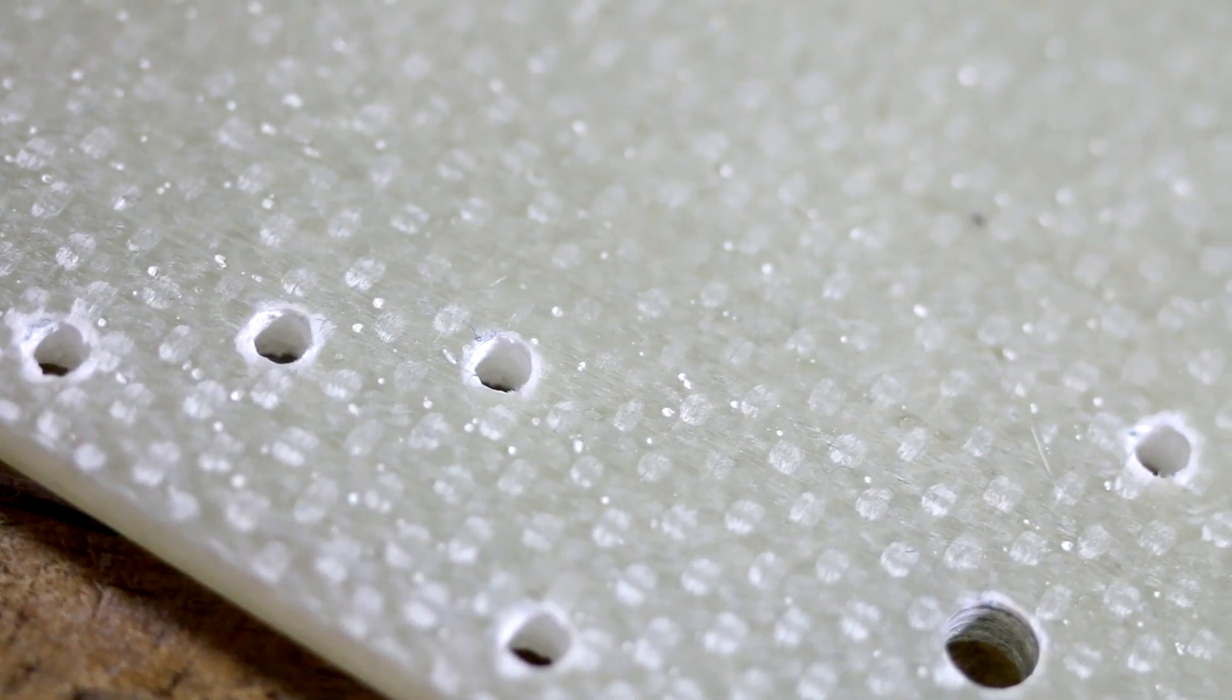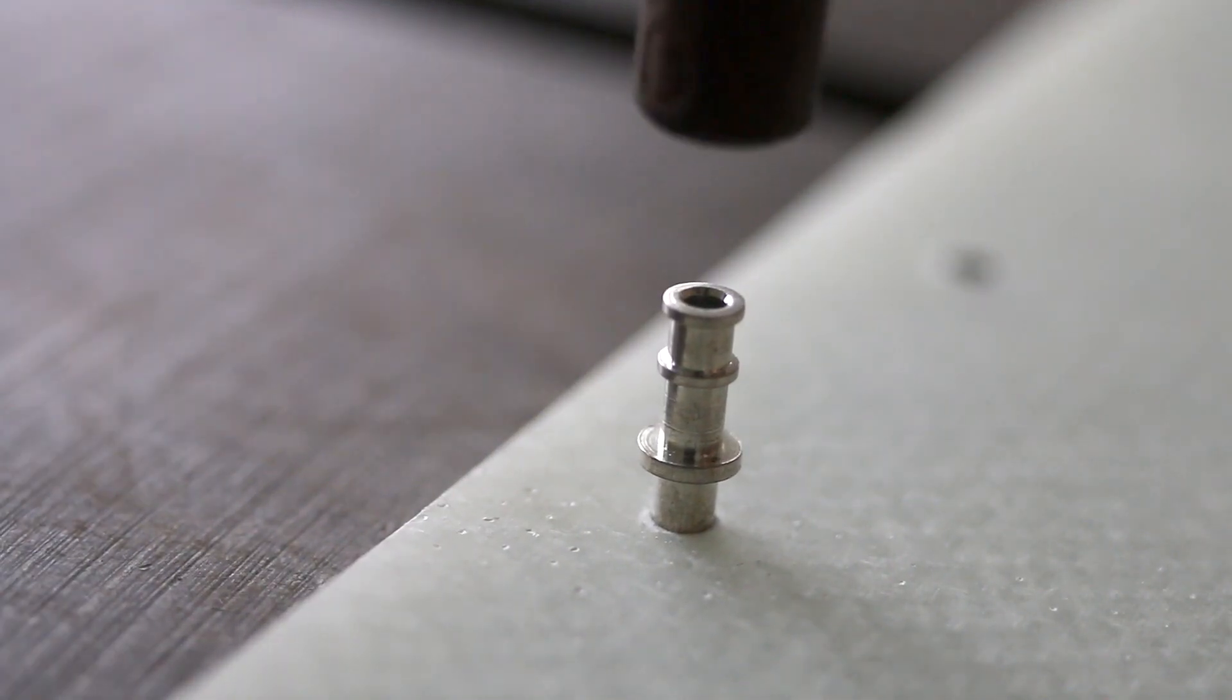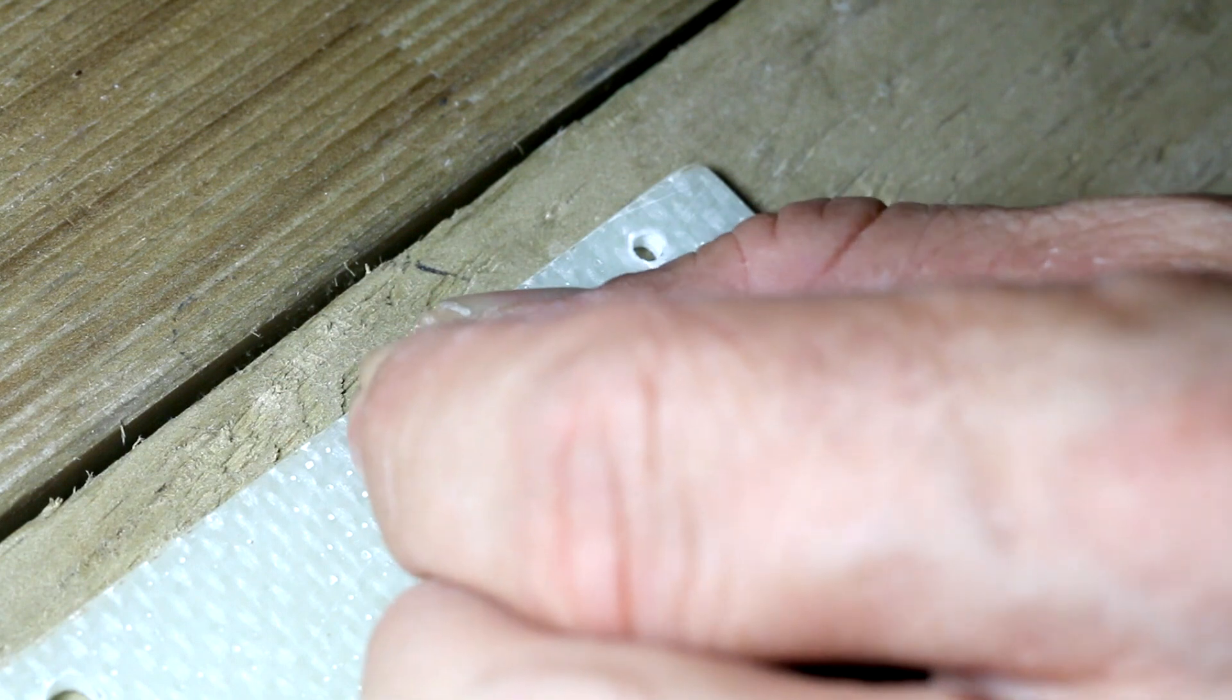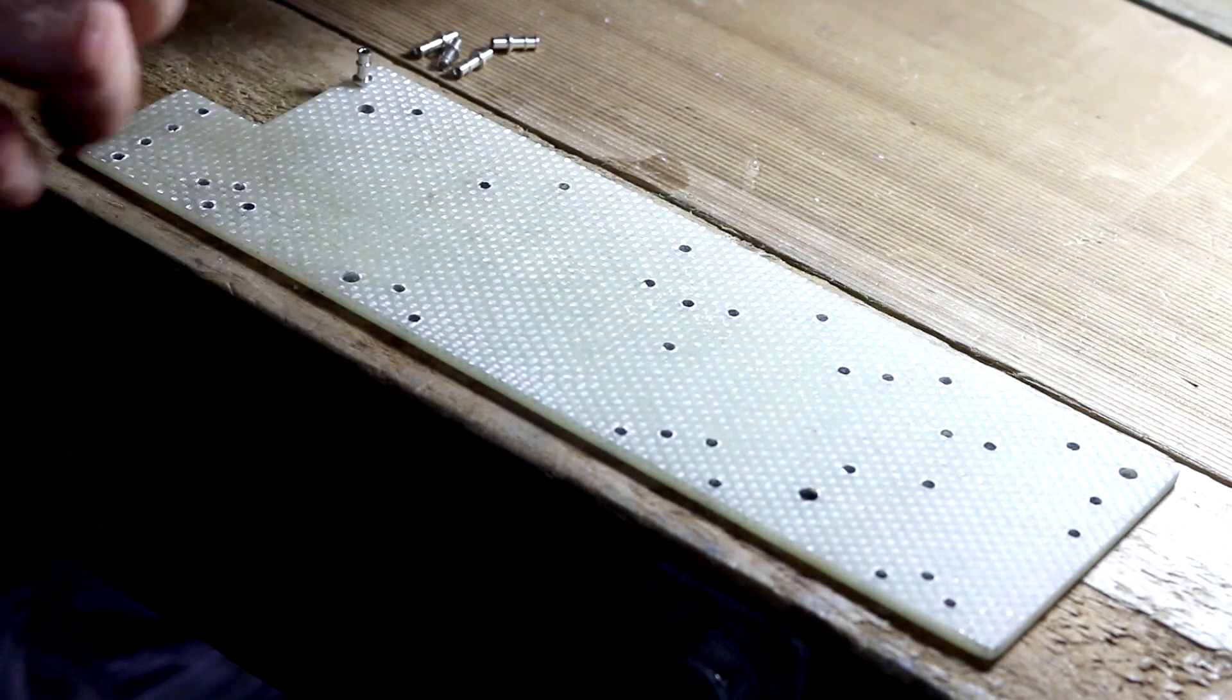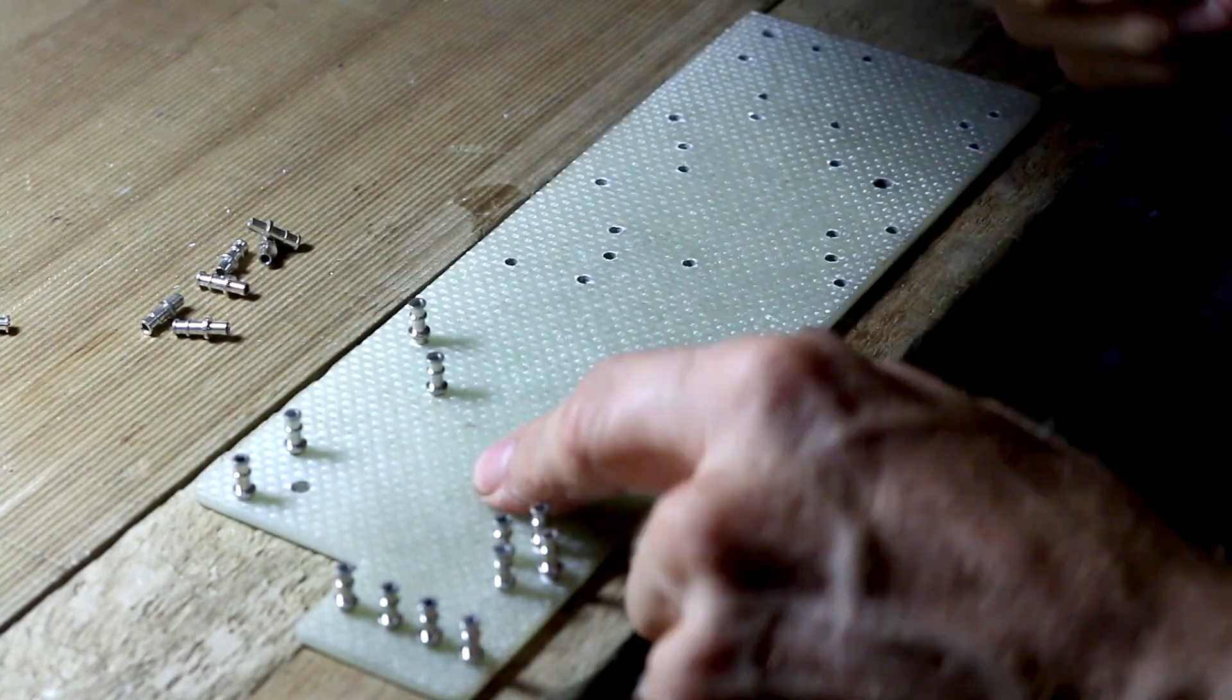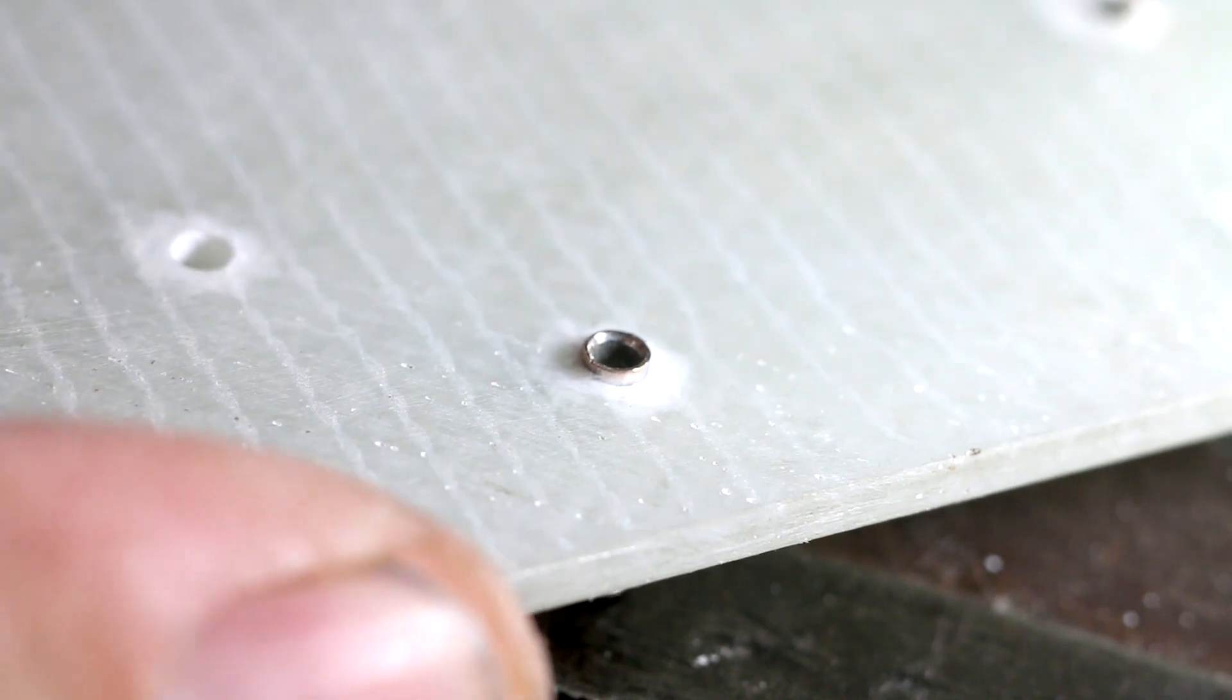Once you've sanded back your turret board, rounded off the corners and tried to make it as neat as possible, hopefully all your holes have come out accurate. Now it's time to put in the turrets. If you have a drill press you can use that to gently press in the turrets. If you don't, just place the turret board on your bench, pop the turret in the hole, and gently knock it in with a wooden mallet. Once you've got all your turrets in, flip your turret board over and it's time to swage the back of the turret. This will hold it in place.